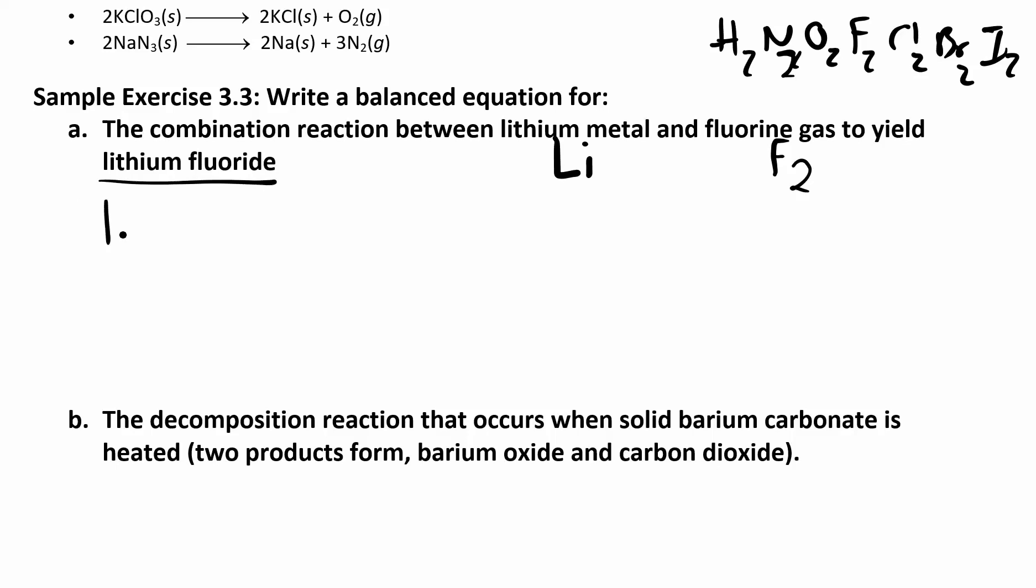Basically you're taking lithium plus fluorine gas, and you're making lithium fluoride. Now this is an ionic compound, so we're going to build that. Lithium is just lithium solid, and fluorine gas is F2. I don't want to just stick those together and say lithium fluoride is LiF2. I need to figure out what that chemical formula really looks like. I know that lithium in an ionic compound has a plus one charge, and fluorine has a minus one charge.